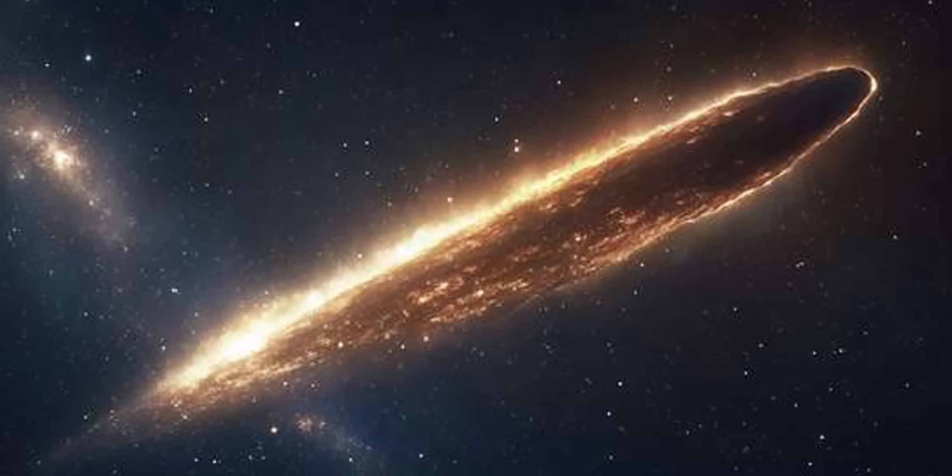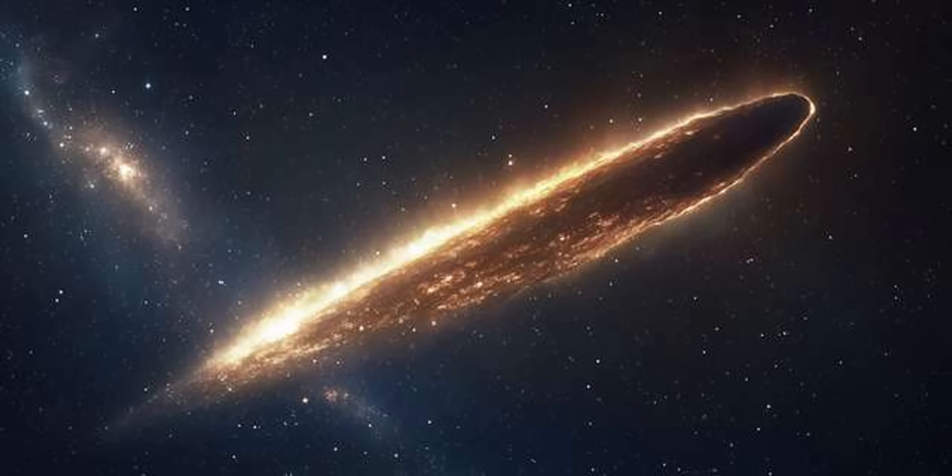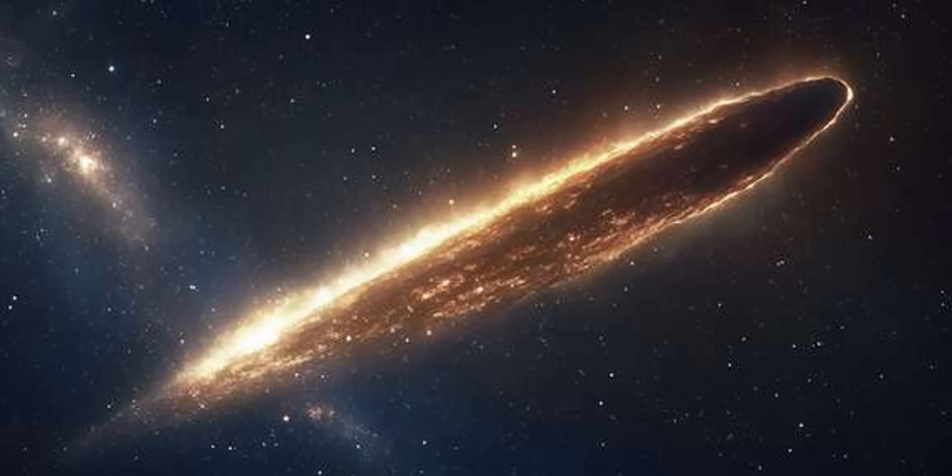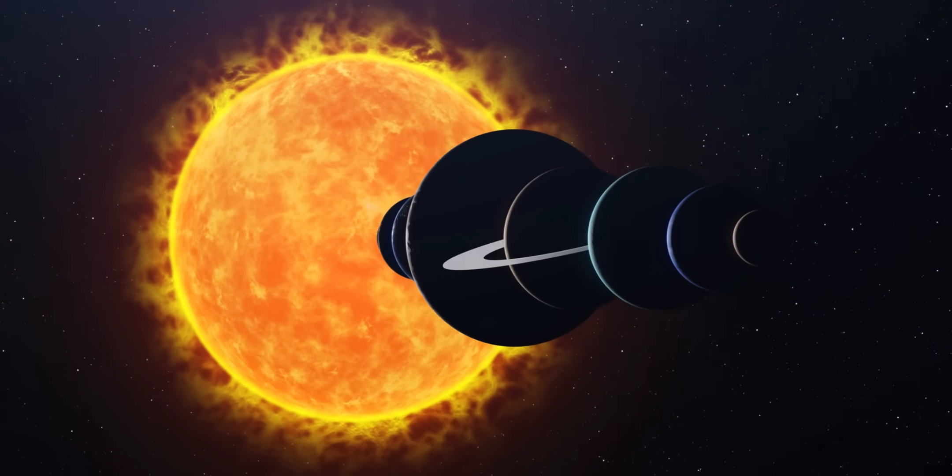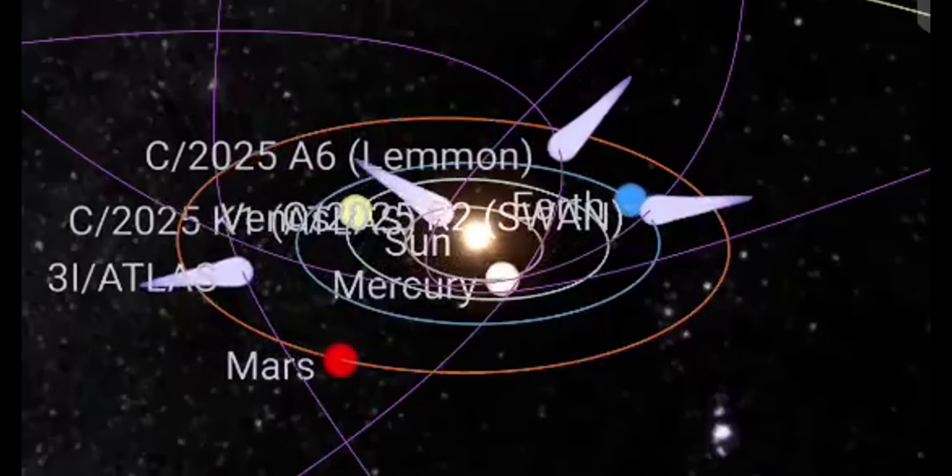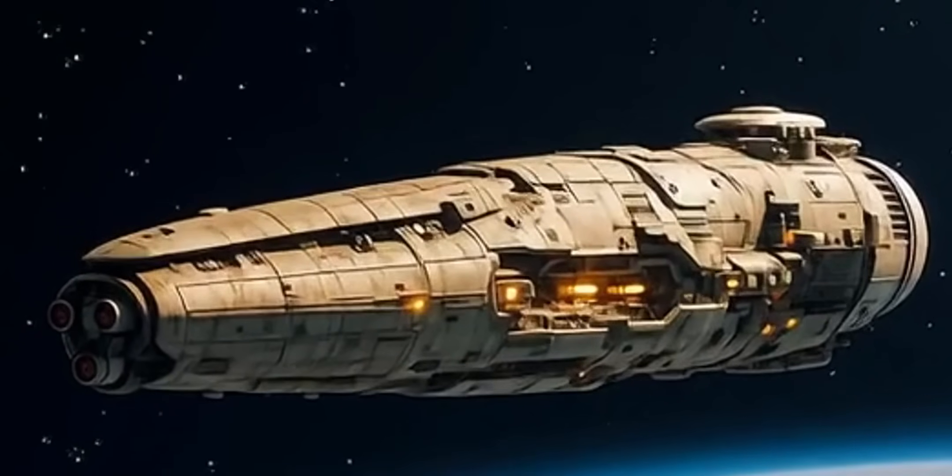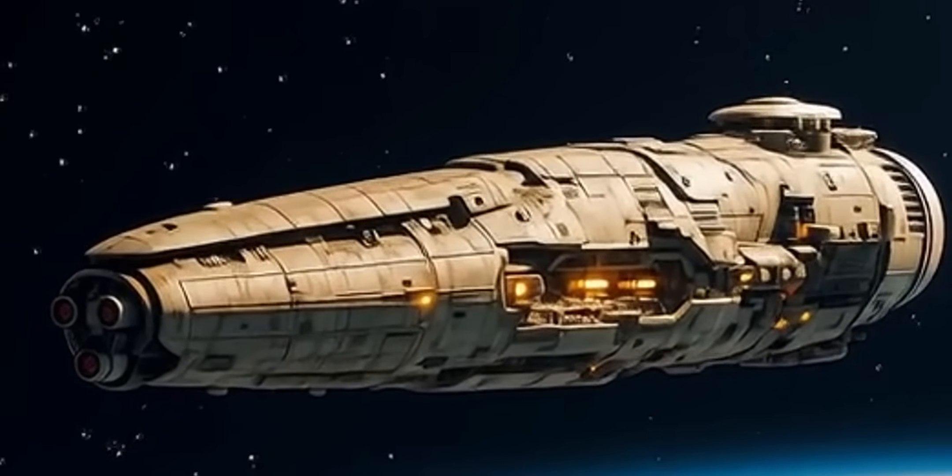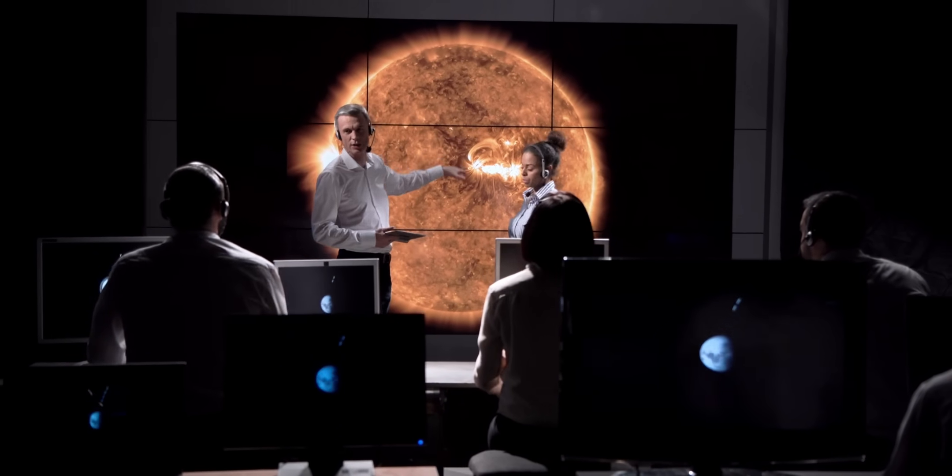3I Atlas is an object that stands out because of its unusual characteristics. Unlike most interstellar visitors, its orbit is closely aligned with the flat plane of our solar system, yet it moves in the opposite, retrograde direction. Combined with its exceptional speed, large size, and unexpected brightness, these features make it an anomaly that challenges conventional explanations and leaves astronomers searching for answers.